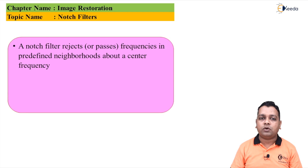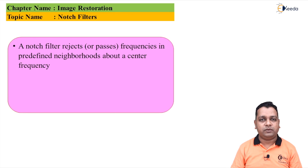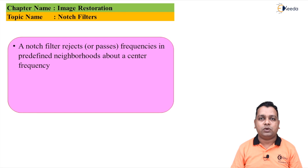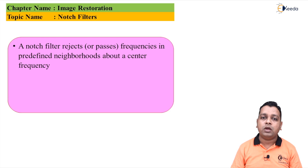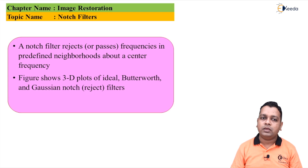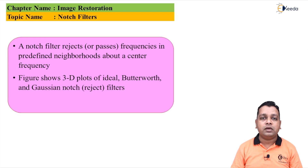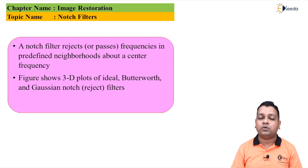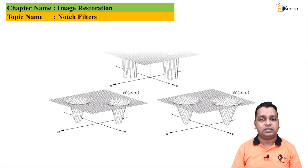We start with our topic: notch type of filtering. A notch filter basically rejects or passes particular frequencies in a predefined neighborhood about a center of the frequency axis. Here we can visualize such a notch filter represented in the three-dimensional case with three types: ideal, Butterworth, and Gaussian notch reject filters.